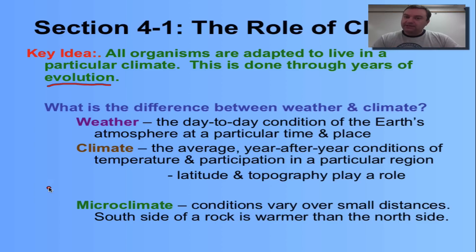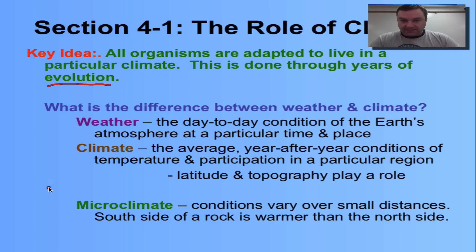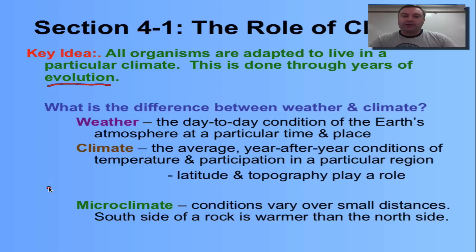Climate is the average year-to-year temperature and precipitation for your particular region. In our area, the Midwest of the United States, we have a very temperate climate where we have our regular seasons of fall, winter, spring, and summer. Each of those seasons has a particular type of precipitation and a weather pattern we would be used to.